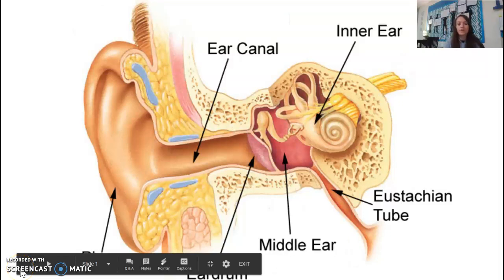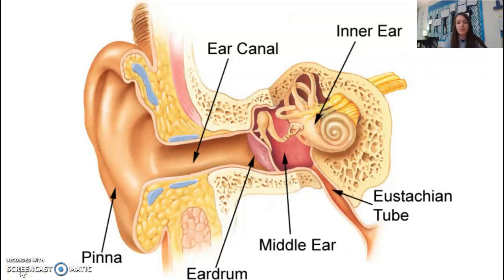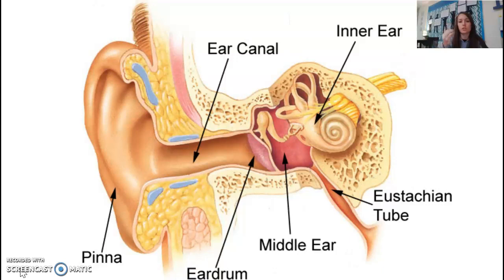We are going to talk about the ear in this video. I'll tell you how sound gets from the outside and how it gets through the ear, into the ear, and how transduction occurs and then changes into a neural message and goes to the brain.